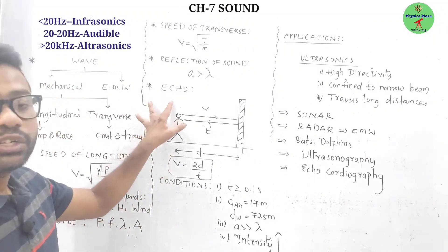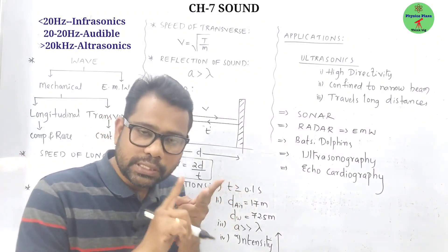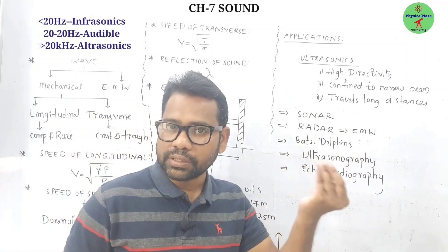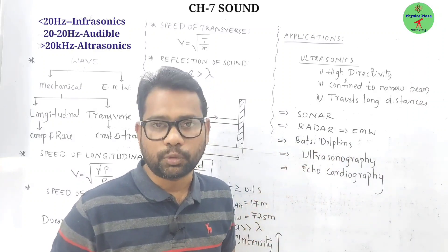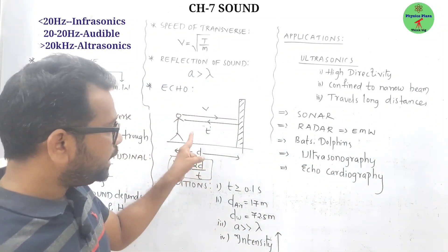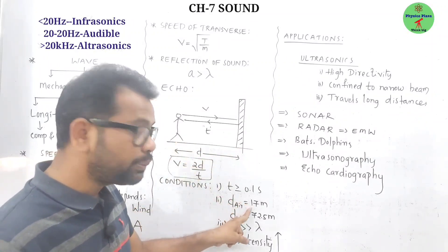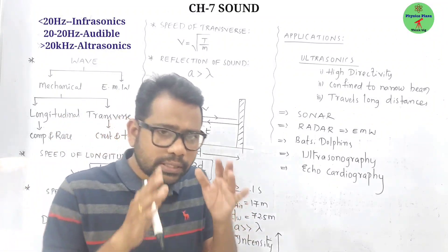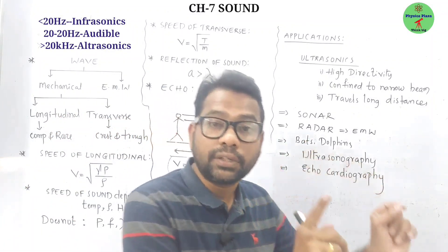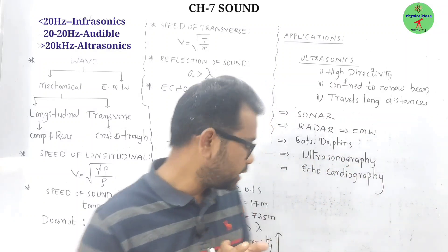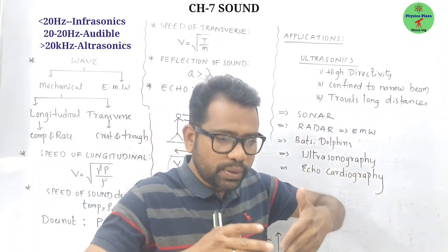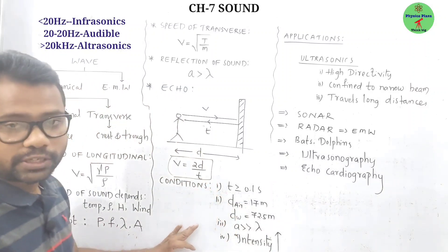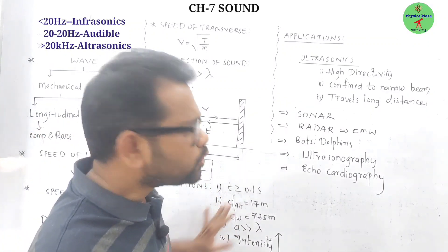Conditions for echo: the time between original sound and reflected sound must be at least 0.1 seconds; in air the minimum distance between obstacle and source must be 17 meters (in water it is 72.5 meters); the size of the obstacle must be much greater than the wavelength of the sound; and the intensity of the original sound must be high enough to reflect back and be heard.